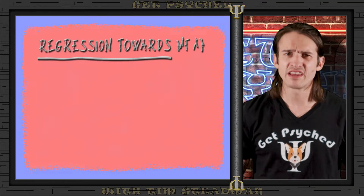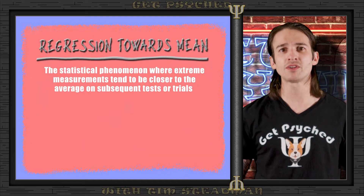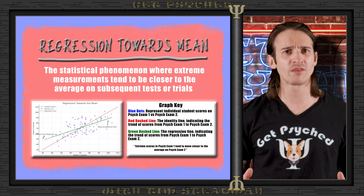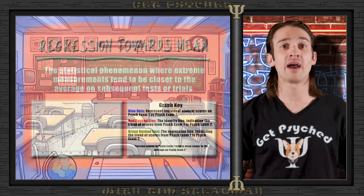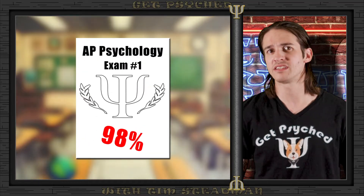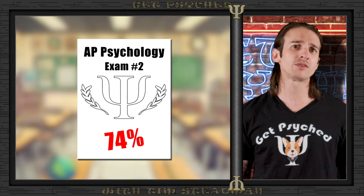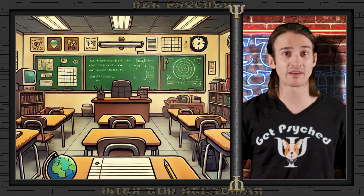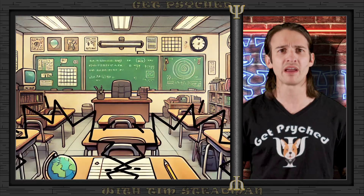Regression towards the mean is a statistical phenomenon where extreme scores or behaviors tend to return towards the average on subsequent measures. This happens because extraordinarily high or low scores often include a component of chance that is unlikely to repeat itself. For example, imagine a student scores exceptionally high on a particularly difficult test, much higher than their usual performance. Their score on the next similar test will likely be closer to the average, illustrating regression towards the mean. The initial high score might have been influenced by favorable exam topics or simply luck, which aren't guaranteed to happen every time.